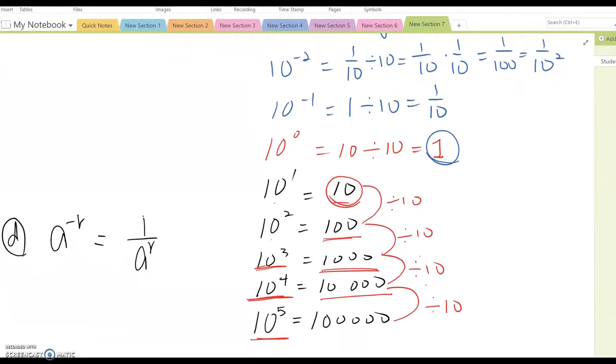Based on this procedure, we can generate two different properties. Whenever we have A to the negative R, like this, then as you see, we can just make a fraction and then make a positive power.